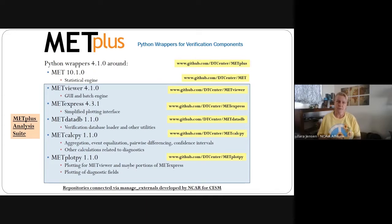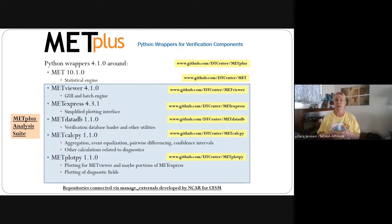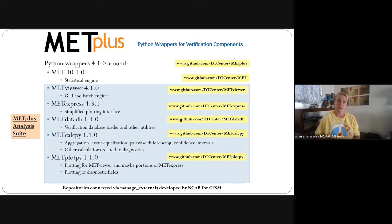First off, this particular release for MET Plus version 4.1.0 — we call this an official coordinated release. It's making sure that every component of MET Plus has what we feel is a fully supported set of software that can be used together to make up the MET Plus framework. So the Python wrappers are version 4.1.0. The MET tool statistical engine is actually version 10.1.0, because it's been out for many more years than the MET Plus wrappers.